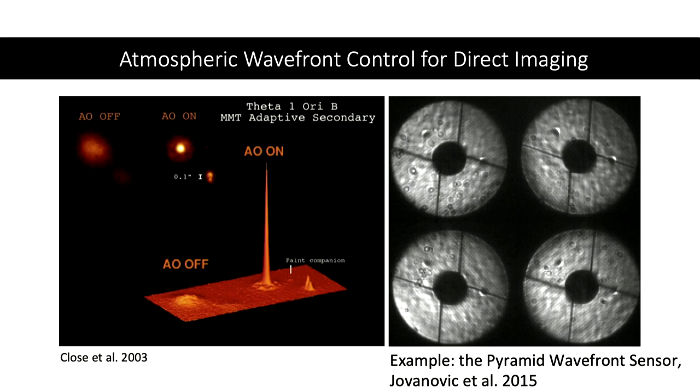Here's an example of adaptive optics on and off. The AO system takes all of the light scattered by seeing and stuffs it back into the core of your point spread function. In this case, here's something that would appear to be a binary — once you turn adaptive optics on, you can now resolve it into a triple. There are many architectures for AO systems. Here's the pupil plane as imaged by a pyramid wavefront sensor, one of many options.